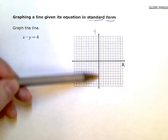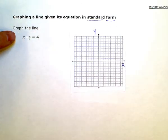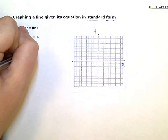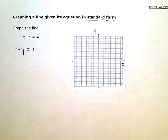So X is 0, which means I can zero out or just kind of block out the X term with my finger and look at what's left. What's left is negative Y equals 4. So I just need to solve this for Y.